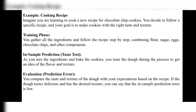In evaluation, we will get a prediction error. After testing, we get an idea if an ingredient is giving bad taste to the cookie, so you should remove it — that idea comes from the prediction error. You compare the taste and texture of the dough with your expectations based on the recipe. If the dough tastes delicious and has the desired texture, the in-sample prediction error is low. If there is bad taste, the prediction error is high.